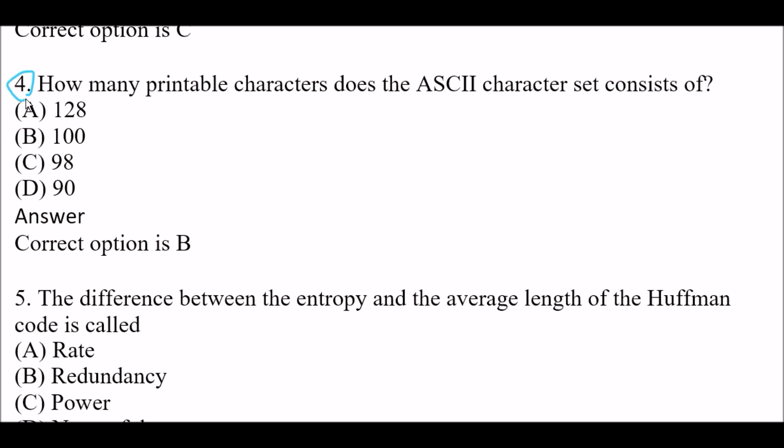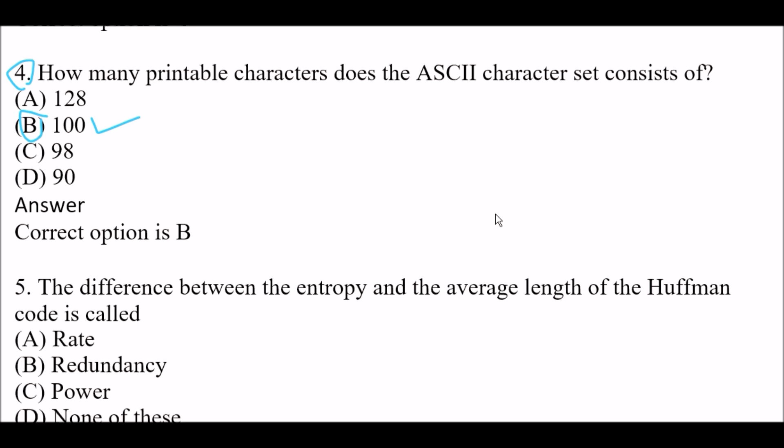Next question: How many printable characters does the ASCII character set consist of? Option A: 128. Option B: 100. Option C: 98. Option D: 90. The right answer is Option B, 100. The ASCII character set consists of 100 printable characters.